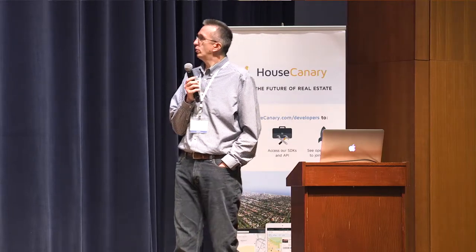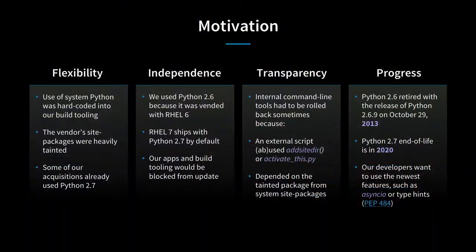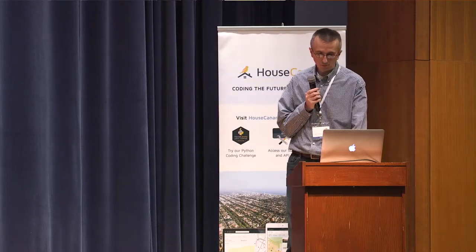So what do we do? We decide we want to move forward. Do we move only to Python 2.7 because Red Hat 7 offers that, or do we go further? We had some really mission-critical teams that wanted newest and greatest features like asyncio and type checking. So we decided to go the full way forward.